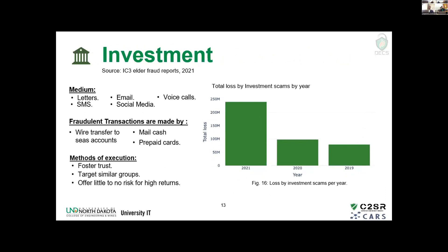Investment scams work by fostering the trust of investors, targeting similar groups or like-minded people who would invest in things like cryptocurrency. The digital markets are really booming right now, and many people — especially the younger generation — are still not sure how these technologies will mature, making them more willing to invest, driven partly by social media hype surrounding these digital platforms. Such solicitations happen across the full spectrum of emails, letters, and phone calls. We observe a linear upward trend for investment scams as well — close to $250 million in losses in 2021.